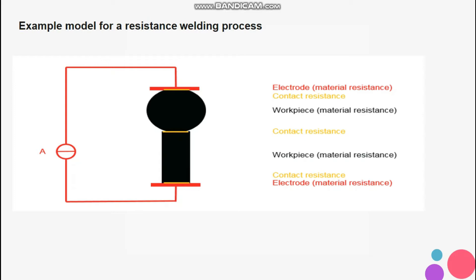Look at the picture: red is the electrode, yellow is the contact, and black is the workpiece. For a stationary electrical current, heat flux is calculated as shown: Q = UI = RI², where Q is heat flux, U is voltage, I is current, and R is electrical resistance.